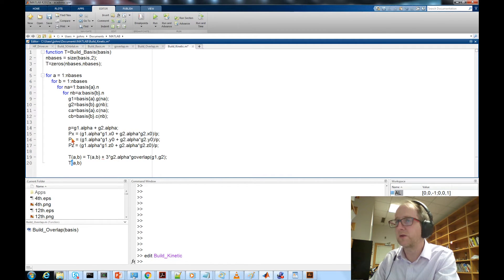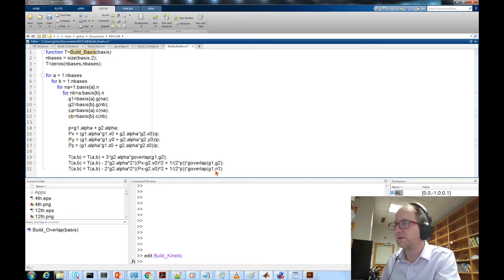Now we need to work on the x, y, and z polynomial parts. They come to be minus 2 times g2 dot alpha squared times the quantity px minus g2 dot x naught squared plus 1 divided by 2 times p times g overlap g1, g2. And again, our x, y, and z components are going to be the same.